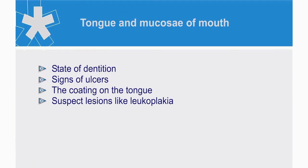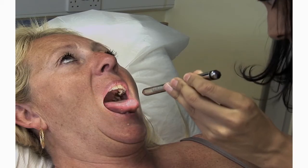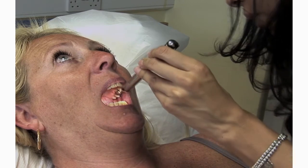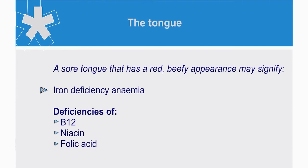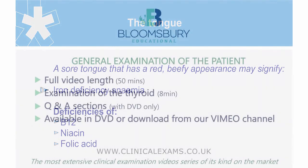When inspecting the tongue and mucosa, look at the state of dentition for signs of ulcers, the coating on the tongue, and for suspect lesions like leukoplakia. Remember to ask the patient to lift their tongue and inspect again. A sore tongue that has a red, beefy appearance may signify iron deficiency anemia or deficiencies of B12, niacin and folic acid.